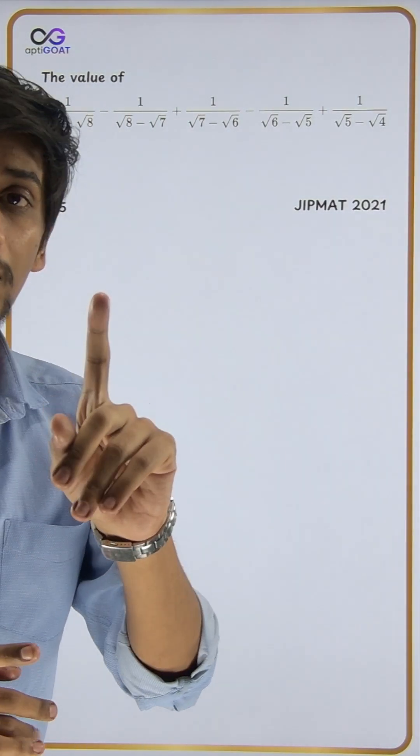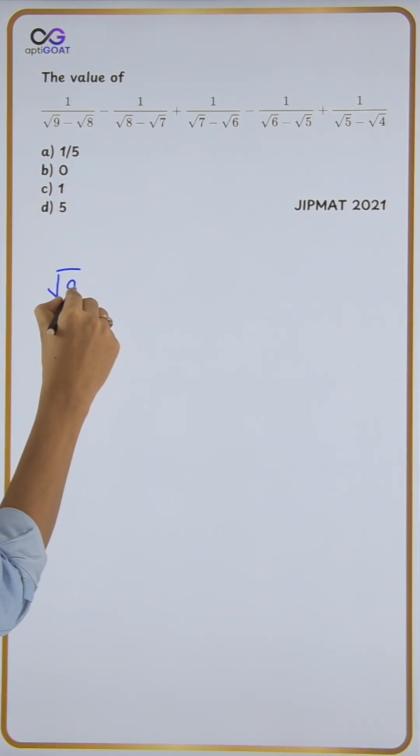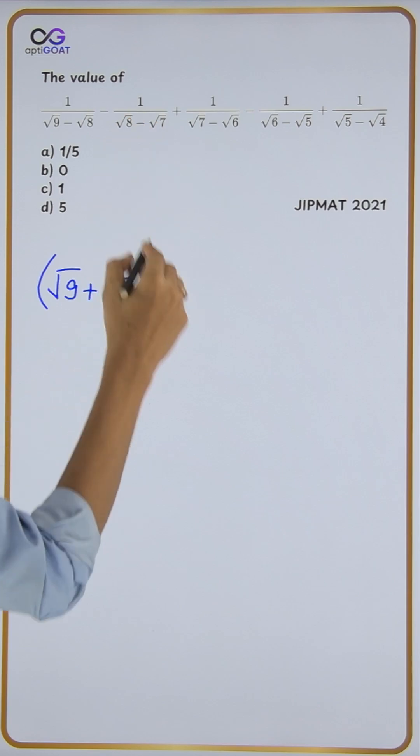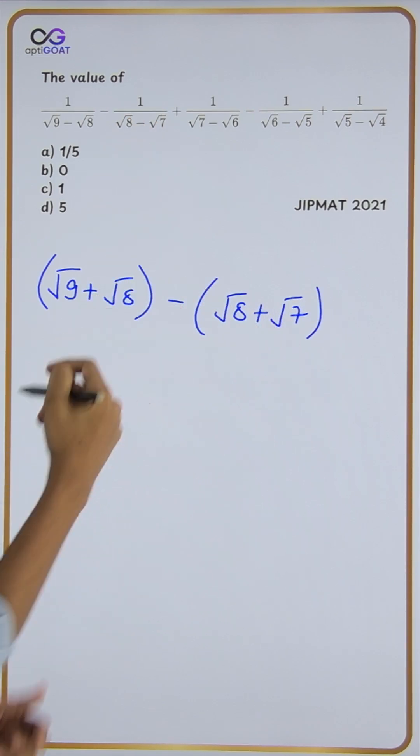We'll write this as root 8 plus root 7. Because of the difference of 1 between consecutive roots, the next term is root 7 minus root 6, and so on.